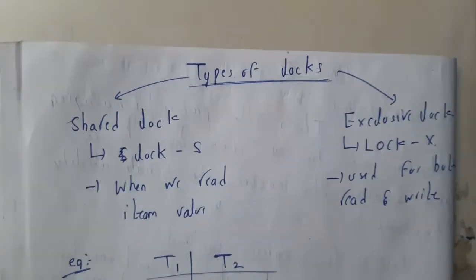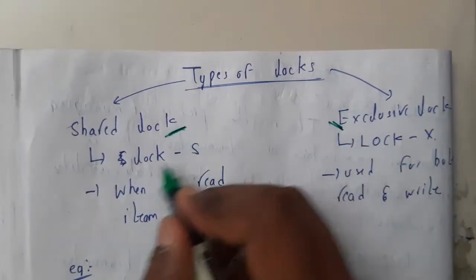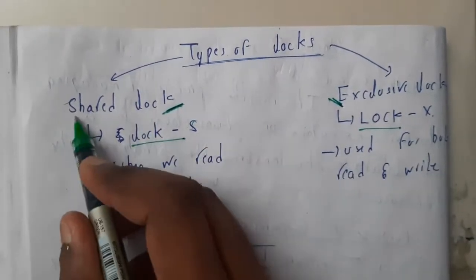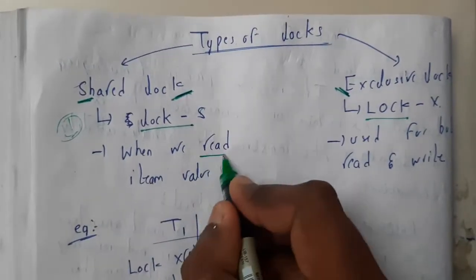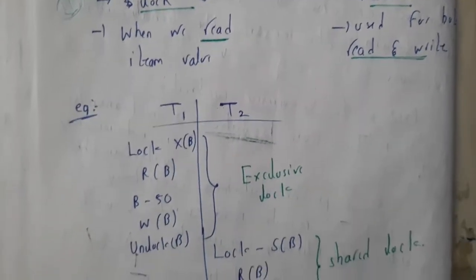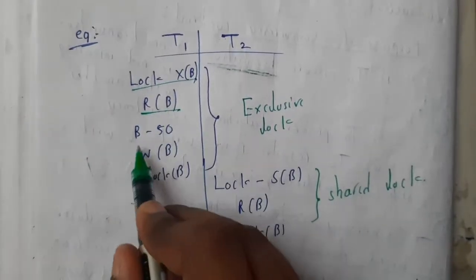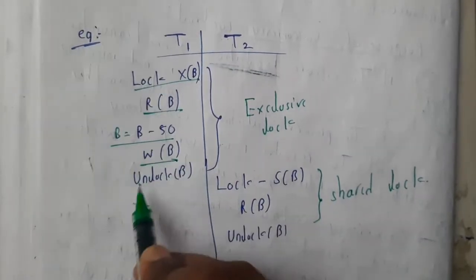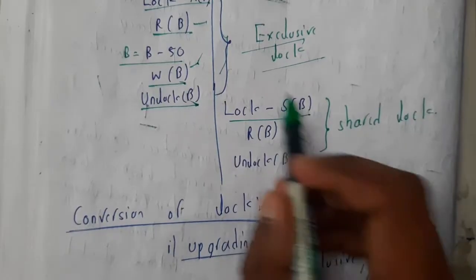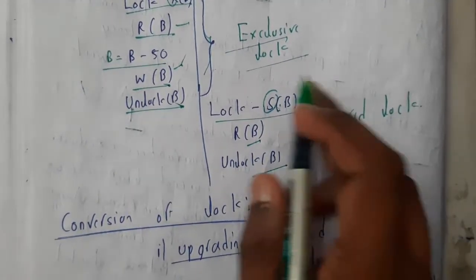There are two types of locks: shared lock (lock-S) and exclusive lock (lock-X). In a shared lock, only read operations are allowed, whereas in an exclusive lock, both read and write operations are allowed. For example, in Transaction 1 we lock B, read B, increment/decrement B, write B, and unlock B — that uses an exclusive lock. In Transaction 2, lock-S(B) allows only a read operation — that is a shared lock.